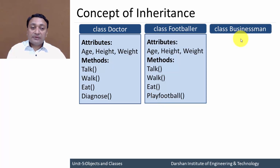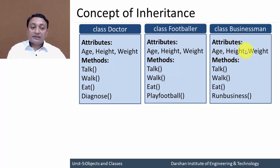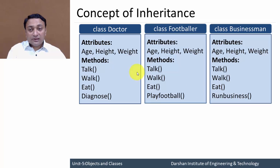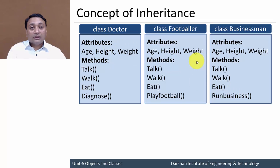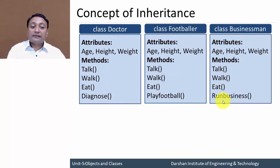Another class, Businessman, has attributes age, height, and weight, and methods talk, walk, eat, and run business. You can observe that these attributes are similar across all three classes, and member functions like talk, walk, and eat are repeated in all three classes. The only difference is that a doctor can diagnose the patient, a footballer can play football, and a businessman can run a business.